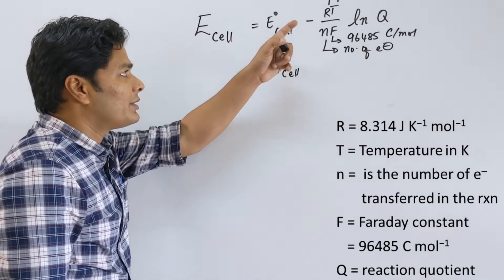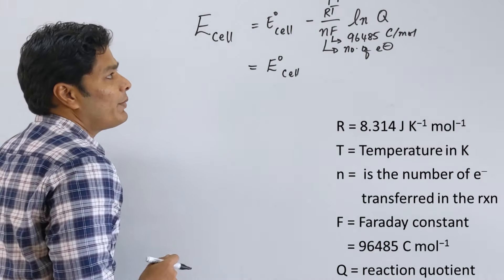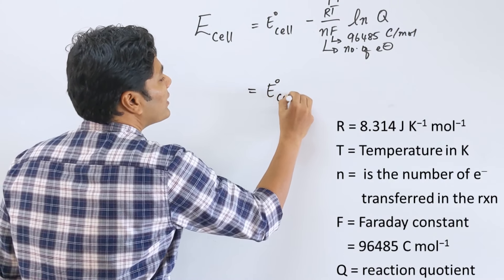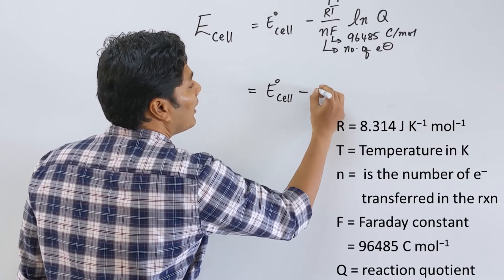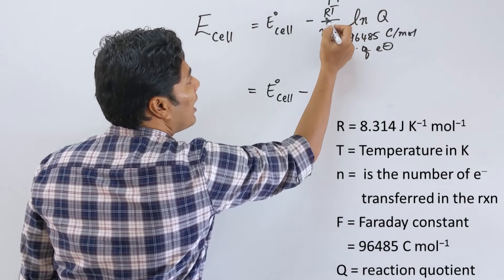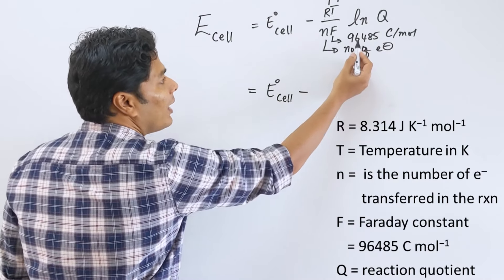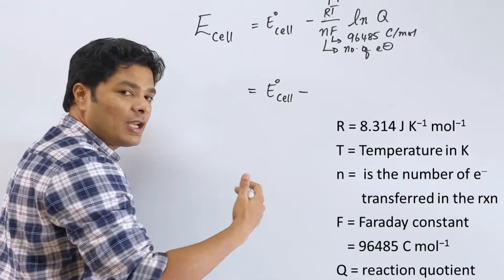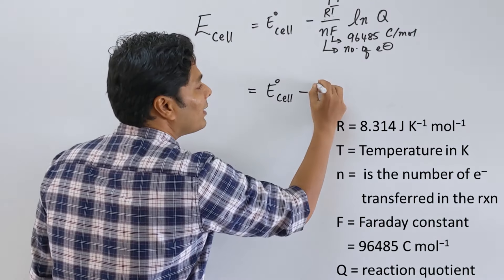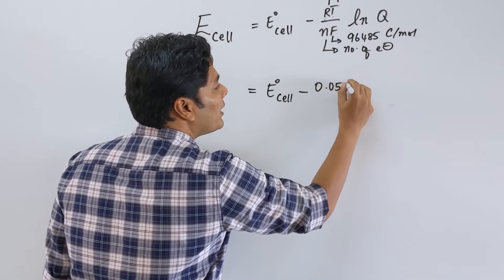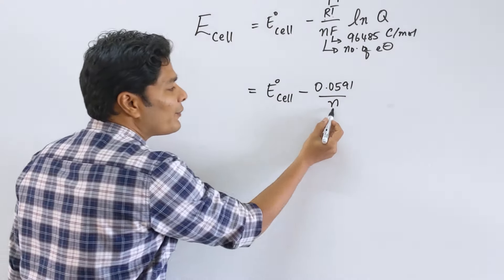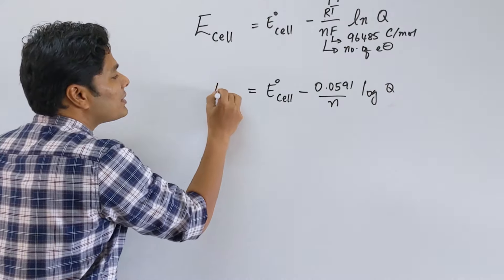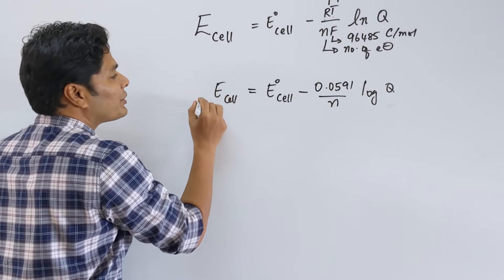E° is related to thermodynamics — it is a thermodynamic parameter, so you want to use 8.314. We can simplify this. If you put the corresponding values for R, temperature at 298 K, and 96,485, and also convert ln to log by multiplying by 2.303, you will get a simplified value of 0.0591/n × log Q. This is the simplified version of the Nernst equation that you have to remember.